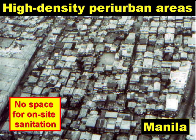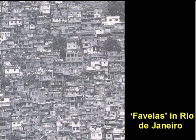This slide shows a very typical high density peri-urban area. It happens to be in Manila in the Philippines, and it shows us that there's really no space at all for on-site sanitation systems. These are favelas or hillside slums in Rio de Janeiro, and again, there's very little space for on-site sanitation.